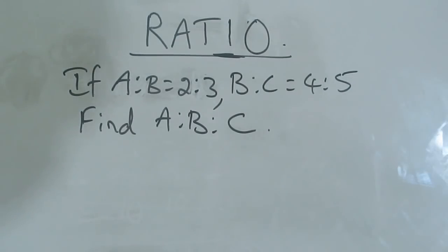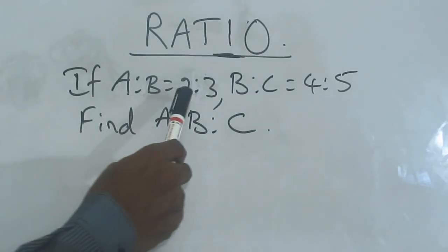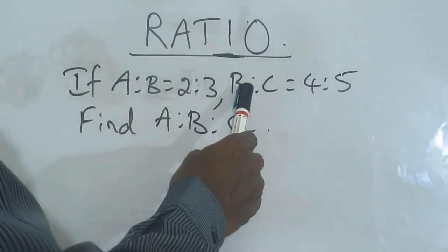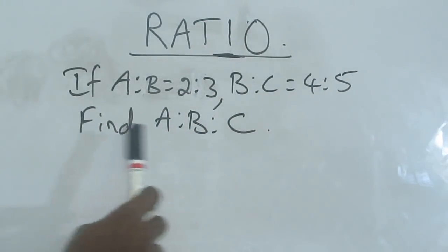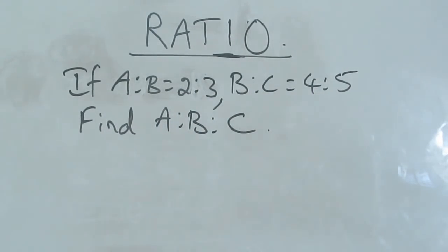Hi, this is Abul Klam. Today we are going to learn ratio. If A is to B equal to 2 is to 3, B is to C equal to 4 is to 5, find A is to B is to C.